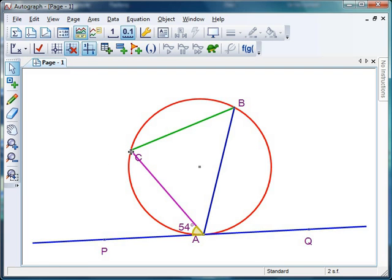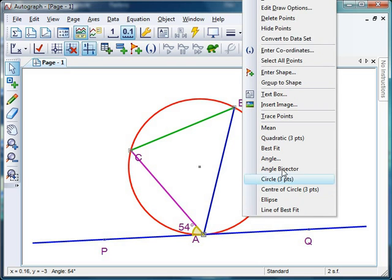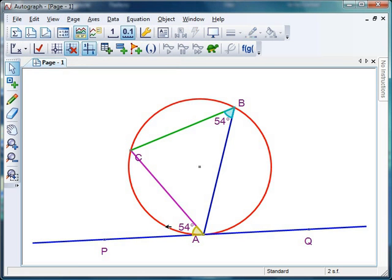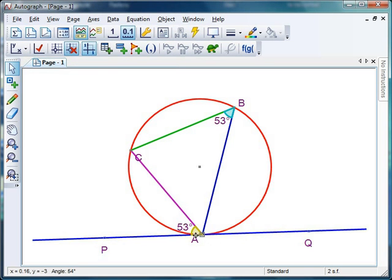But hopefully, one of them will spot fairly soon that if you measure C to B to A, and you right-click, and you go angle, and you get a fat angle, and you display it to zero decimal places, and you click OK, there it is, 54 degrees as well. And of course,